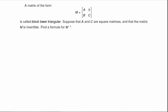So this matrix is called block lower triangular because it looks like a lower triangular matrix, but it is a block matrix. We're going to suppose that A and C are square, and that our matrix M is invertible. We want to find a formula for the inverse.